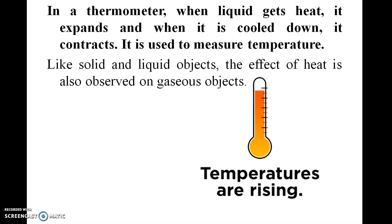In a thermometer, when a liquid gets heat it expands, and when it is cooled down it contracts. This property is used to measure temperature. Like solid and liquid objects, the effect of heat is also observed on gaseous objects.